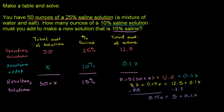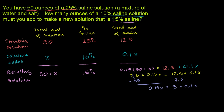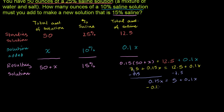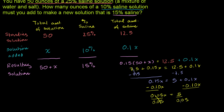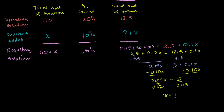Now we subtract 0.10x from both sides of the equation. Those terms cancel, and the left-hand side gives us 0.05x equals 5. Now we divide both sides by 0.05. We get x equals 5 divided by 0.05, which is the same as 5 times 20, so x equals 100.